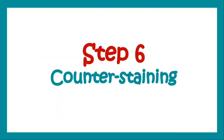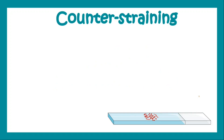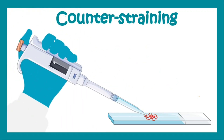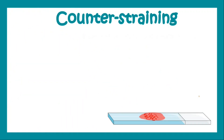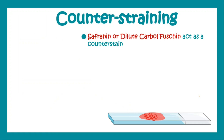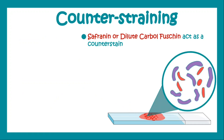Now we come to counter staining. We counter stain the slide using safranin or methyl violet or carbol fuchsin. After counter staining we can clearly see the distinct gram-positive and gram-negative organisms. Gram-positive organisms appear deep violet and gram-negative organisms appear bright red or bright pink.